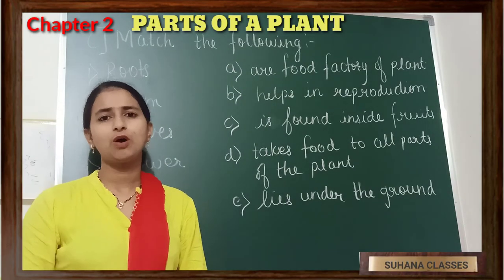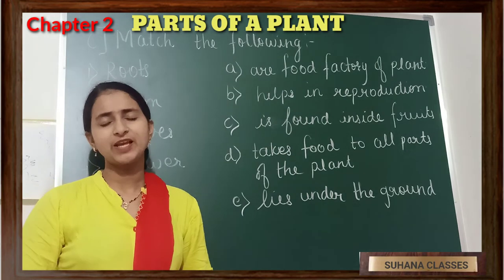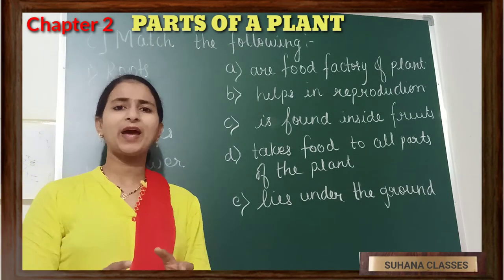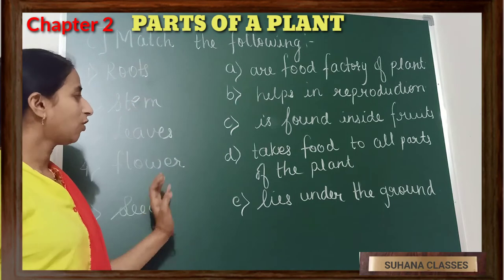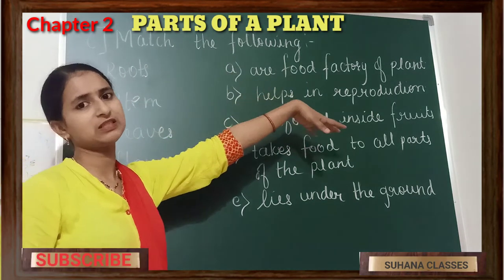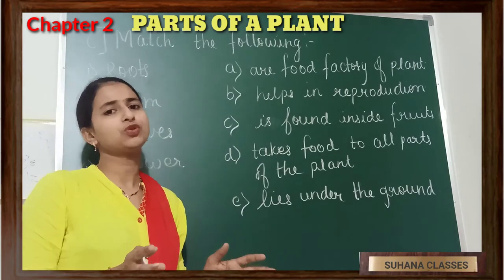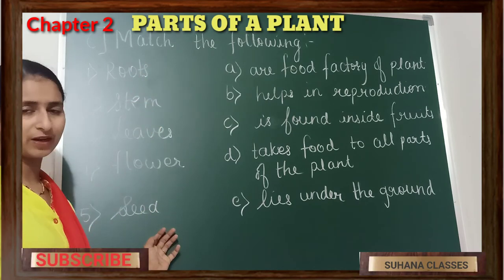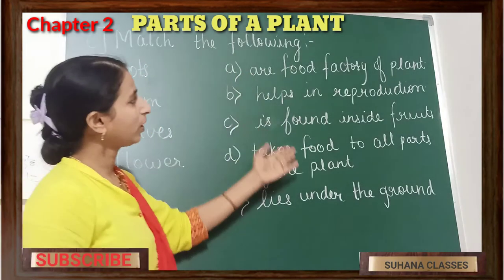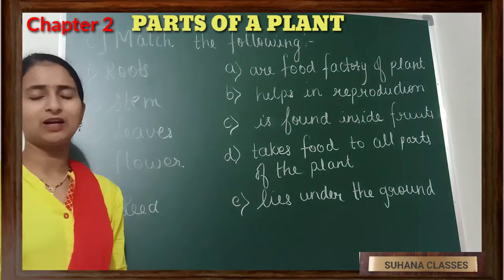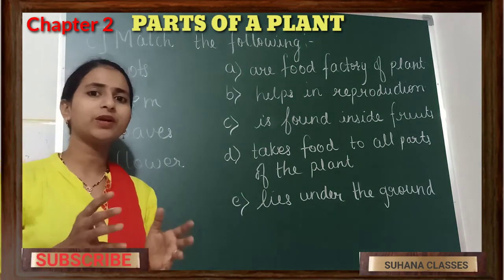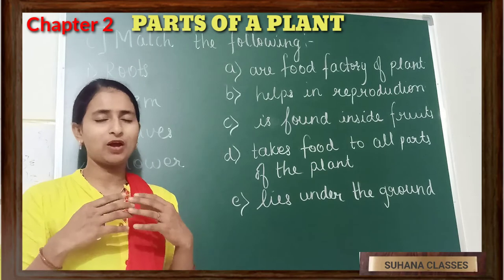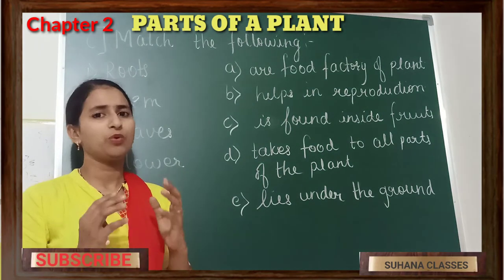Today we are going to solve main question number C from our exercise of Chapter 2, Parts of a Plant. Question C is 'Match the Following.' Two groups of words are given — some parts of a plant, and the work done by each part. As we have studied the chapter well, we can answer it easily.